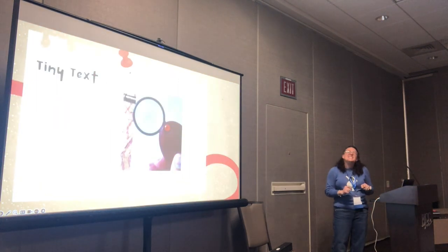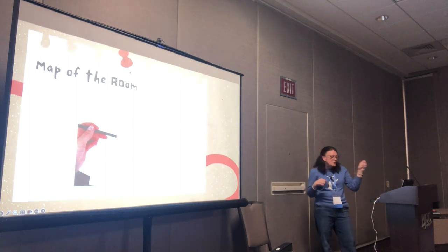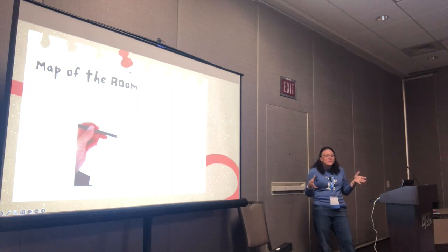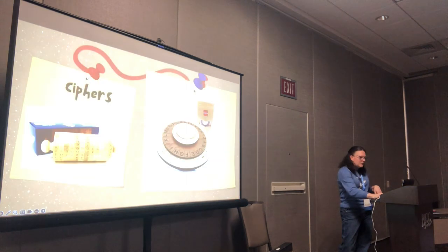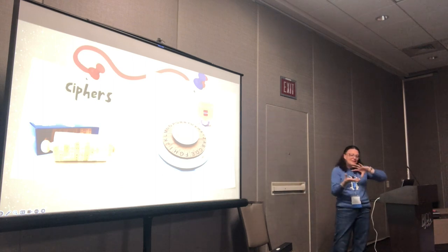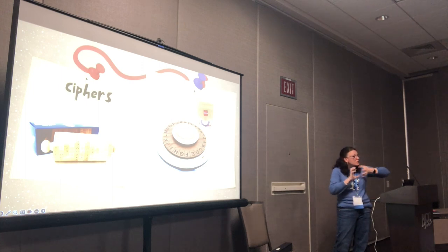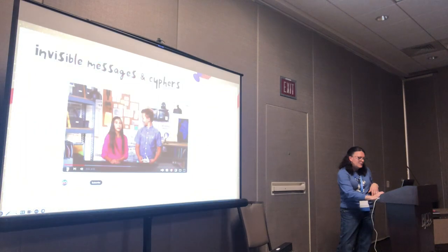Another option is teeny-tiny text — you write it so small they need a magnifying glass to read it. You can also give them a map of the room showing where the different puzzles are so they can mark them off as they go. If you want really neat puzzle tools, you can get cipher wheels on Amazon — the wheels turn to different letters or faces. I like them for smaller kids because they're manipulative and hands-on.